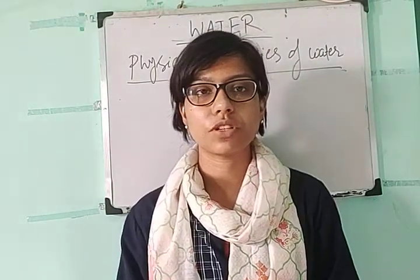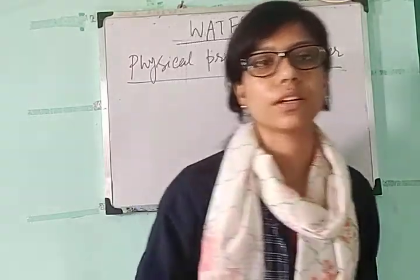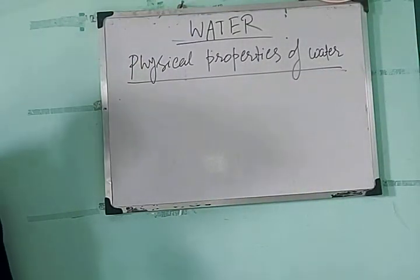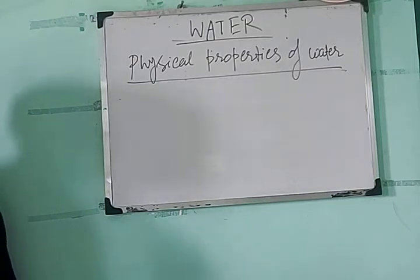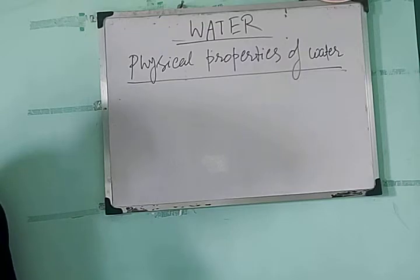Hello class 9, this is your chemistry class and we are discussing about water. We have discussed about the second physical property of water, that is boiling point, and how boiling point depends on atmospheric pressure, and what is the principle of the pressure cooker. Some remaining points about boiling point are still to be covered.